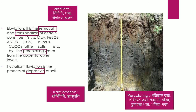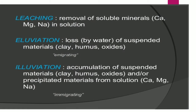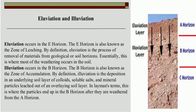Leaching is removal, eluviation is loss, and illuviation is accumulation. First eluviation occurs, then illuviation. Eluviation occurs in the E horizon, also known as the A horizon — the zone of leaching. Eluviation is the process of removal of material from a geological or soil horizon.